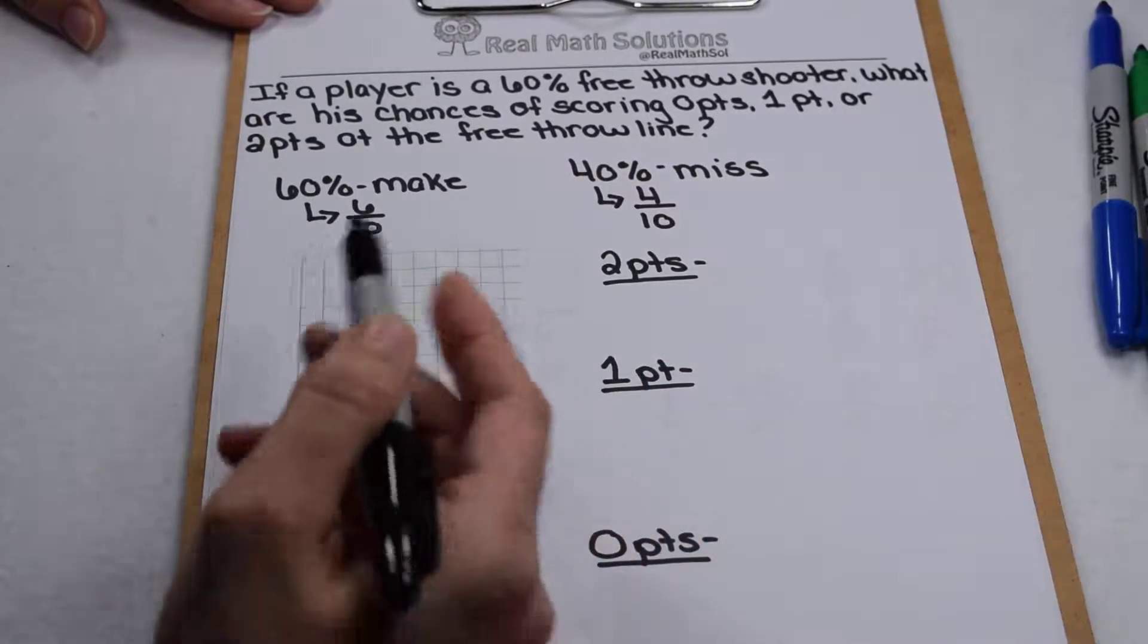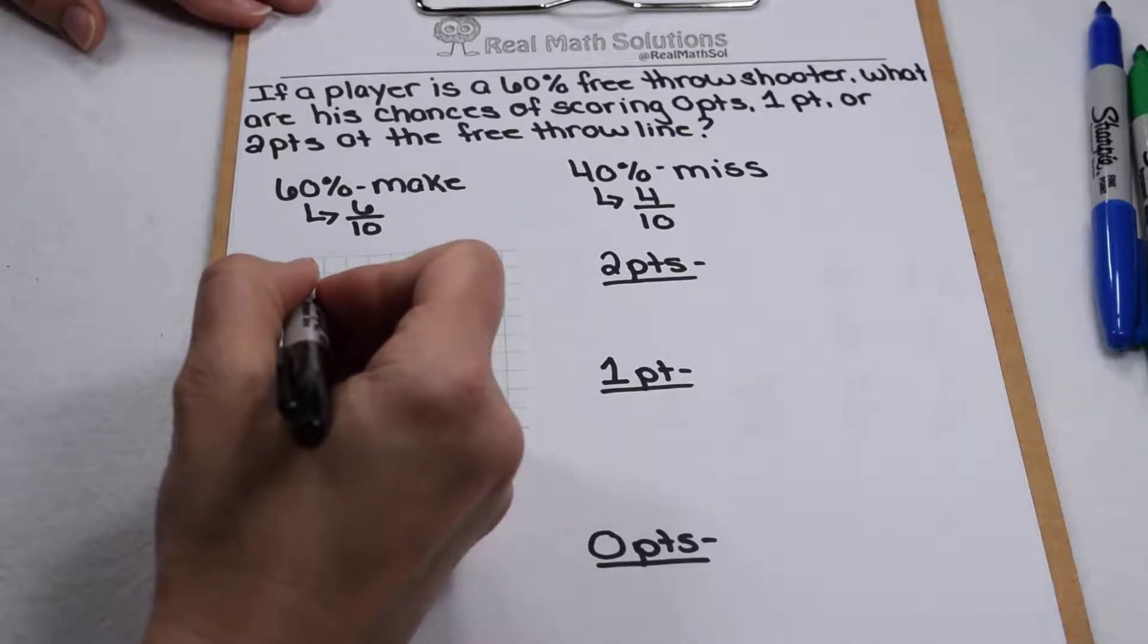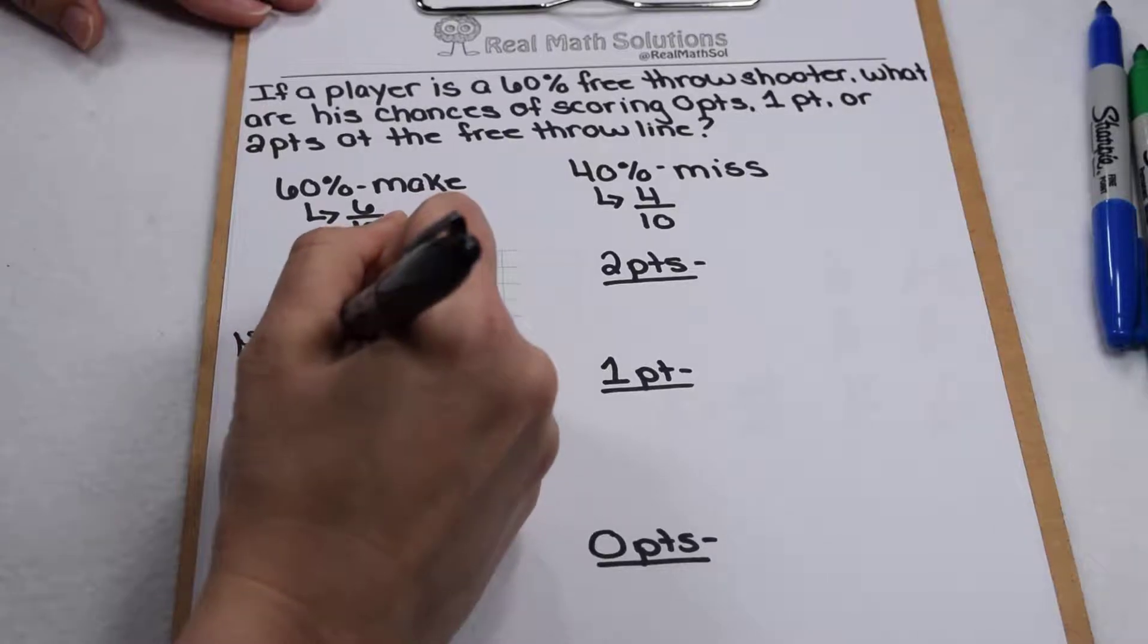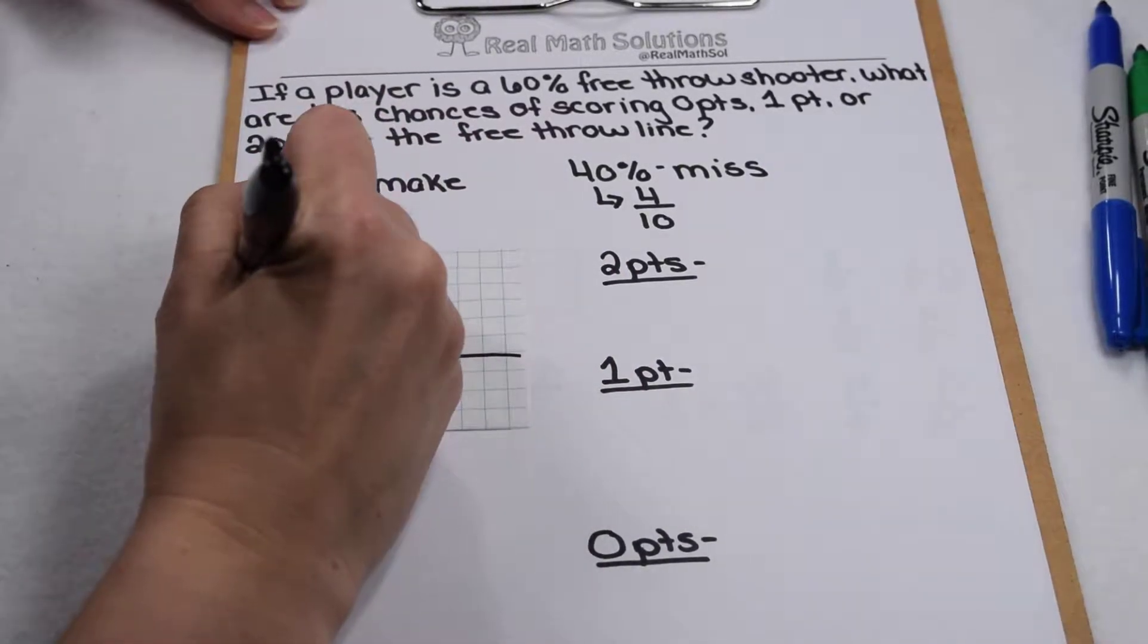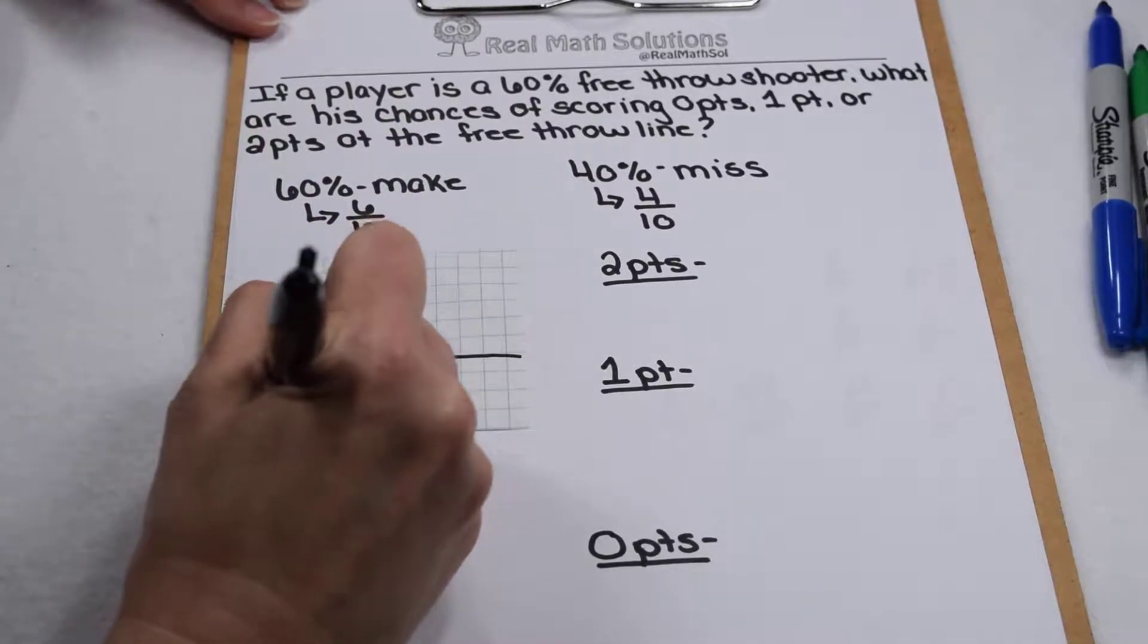Now I can illustrate that on my 10 by 10 grid. So on his first shot, he has a 6 out of 10 chance of making it and a 4 out of 10 chance of missing it.